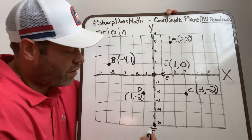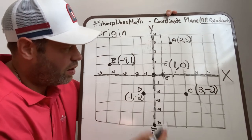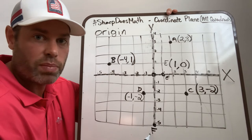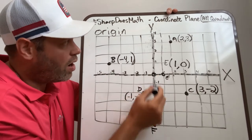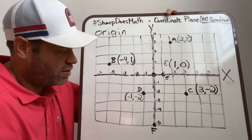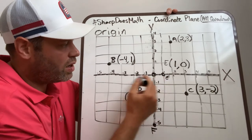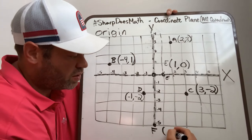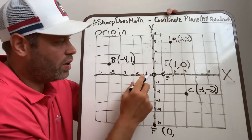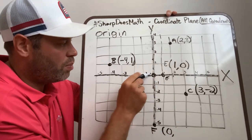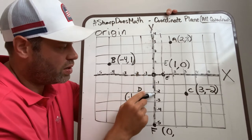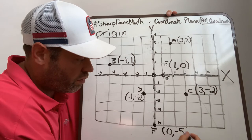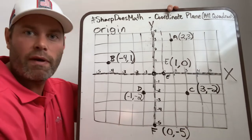Now for F. If we start here, you can see it down at the bottom of the screen. It's on that axis. So we're not going to go side to side at all. F is going to be 0 because we're not going right or left, but then we are going down 1, 2, 3, 4, negative 5.